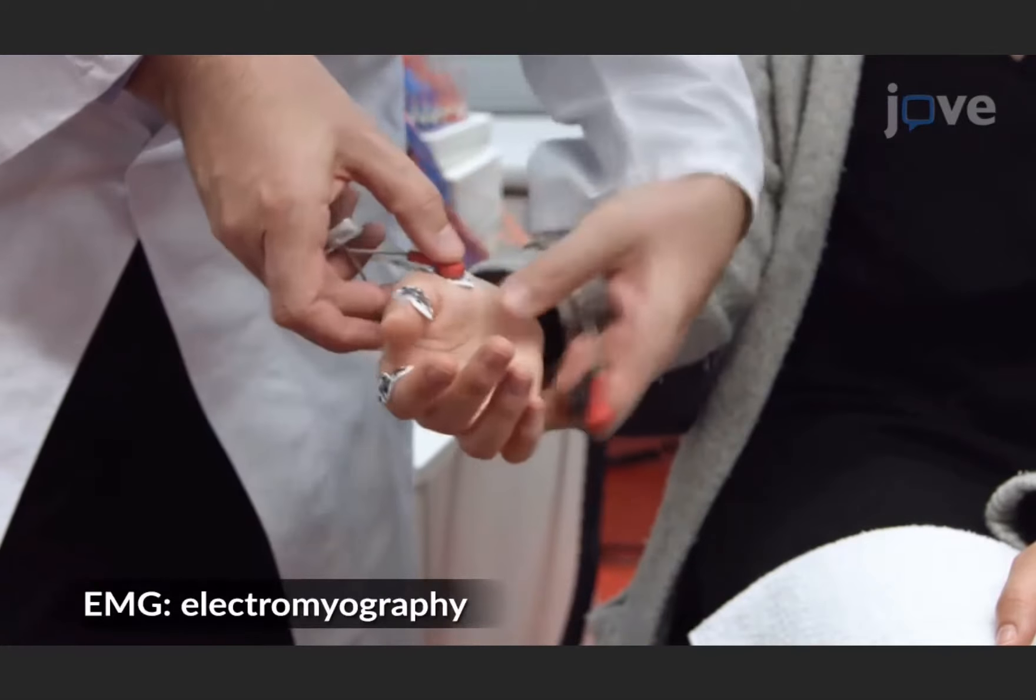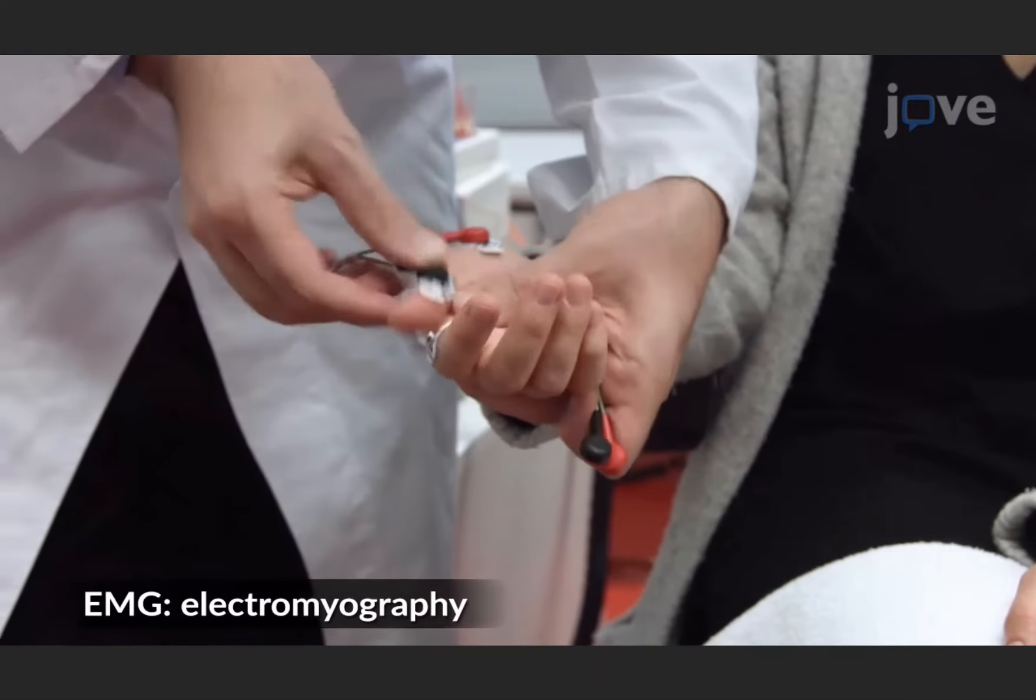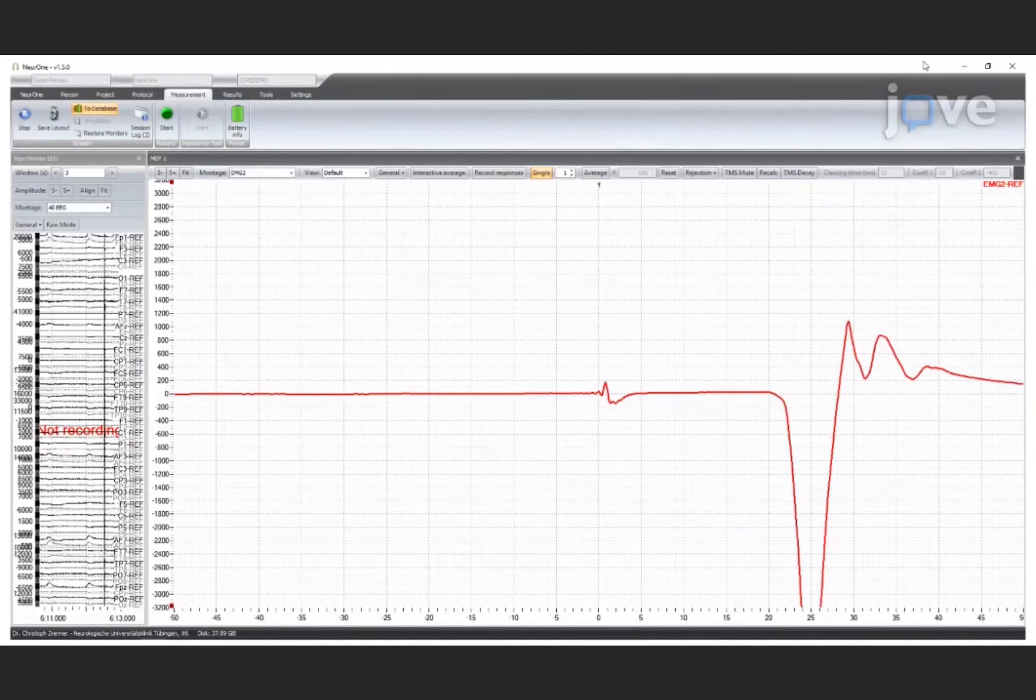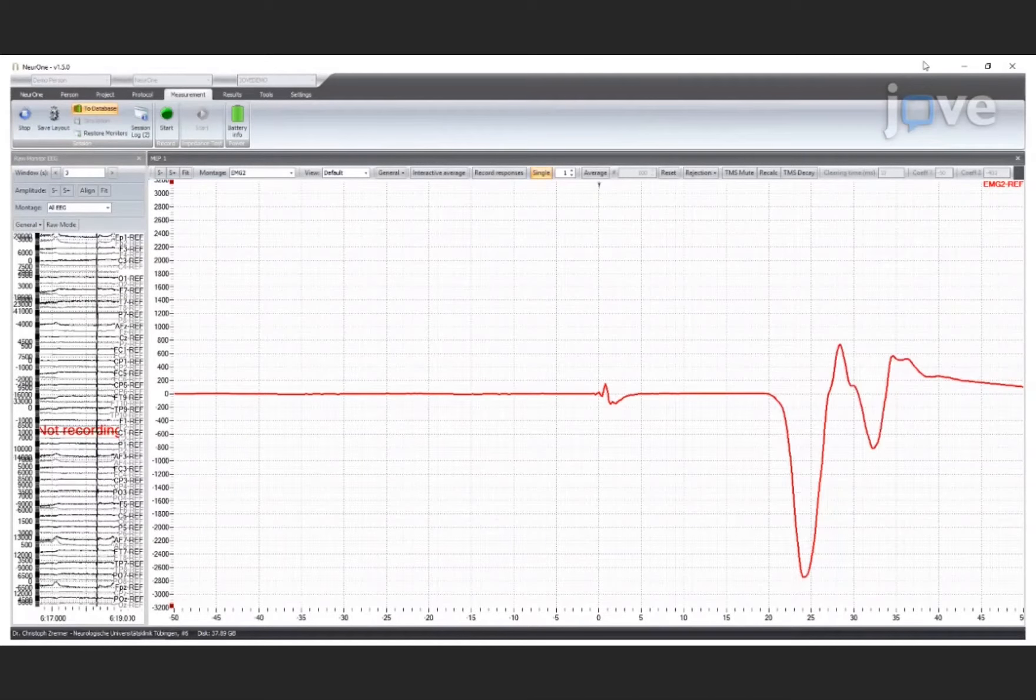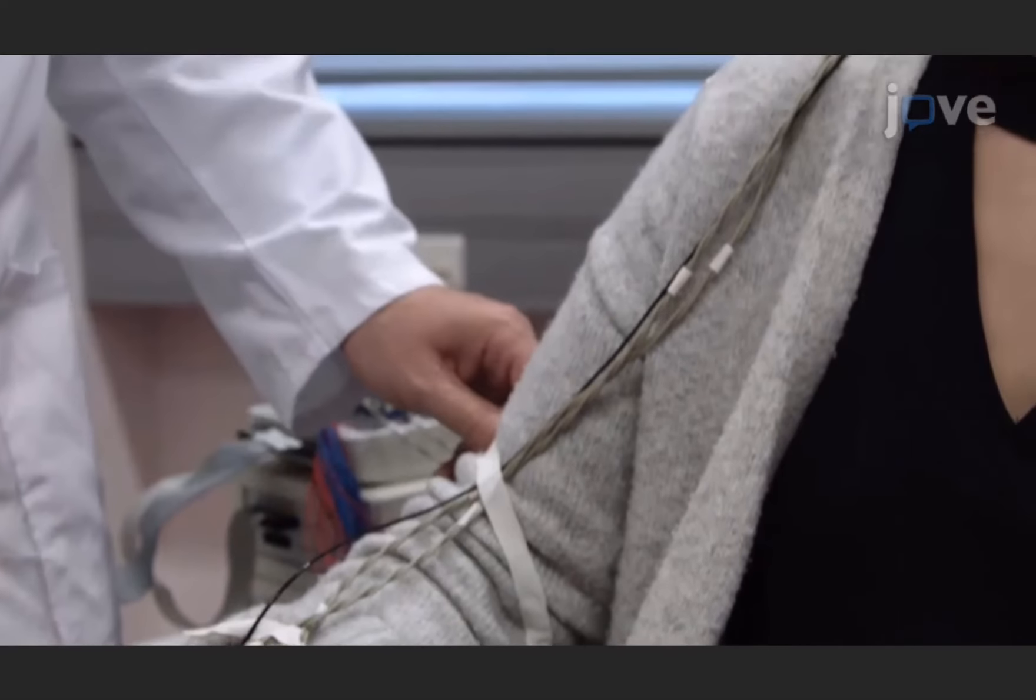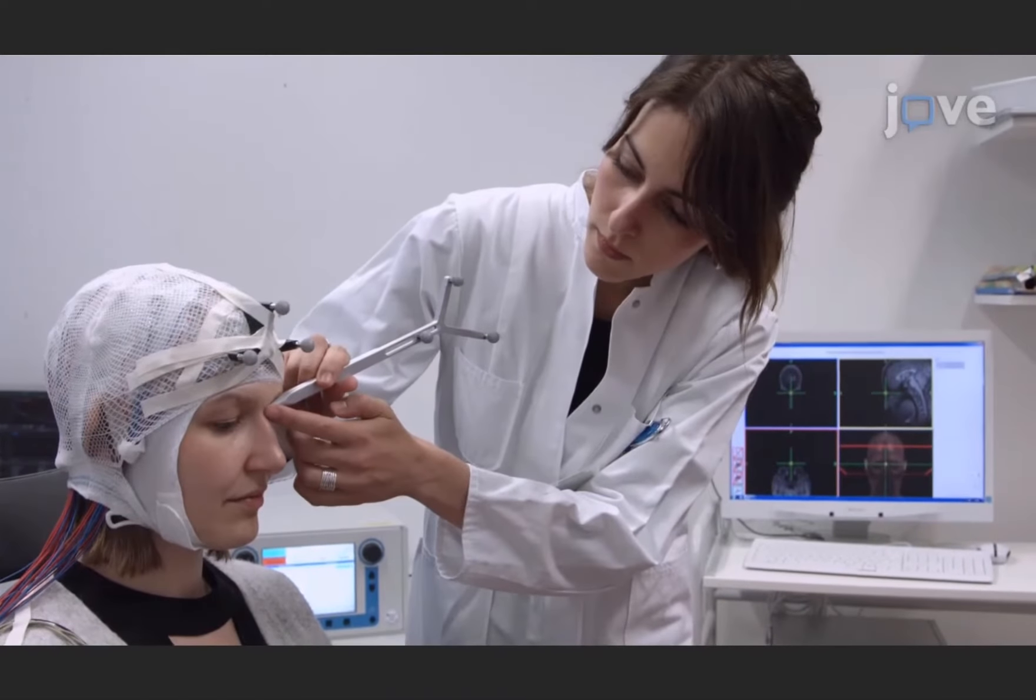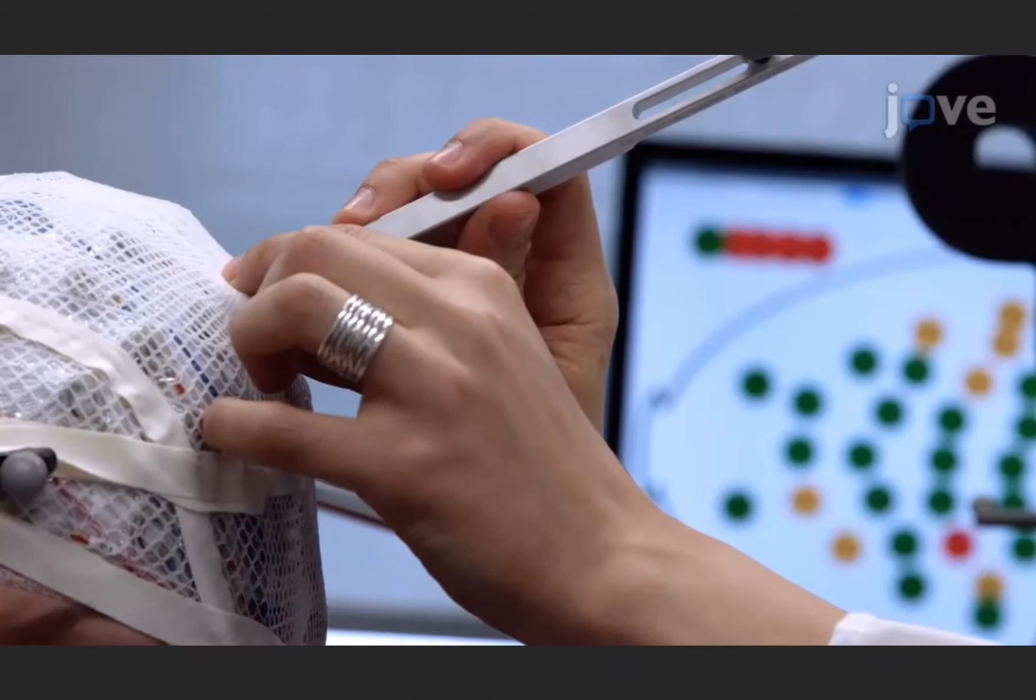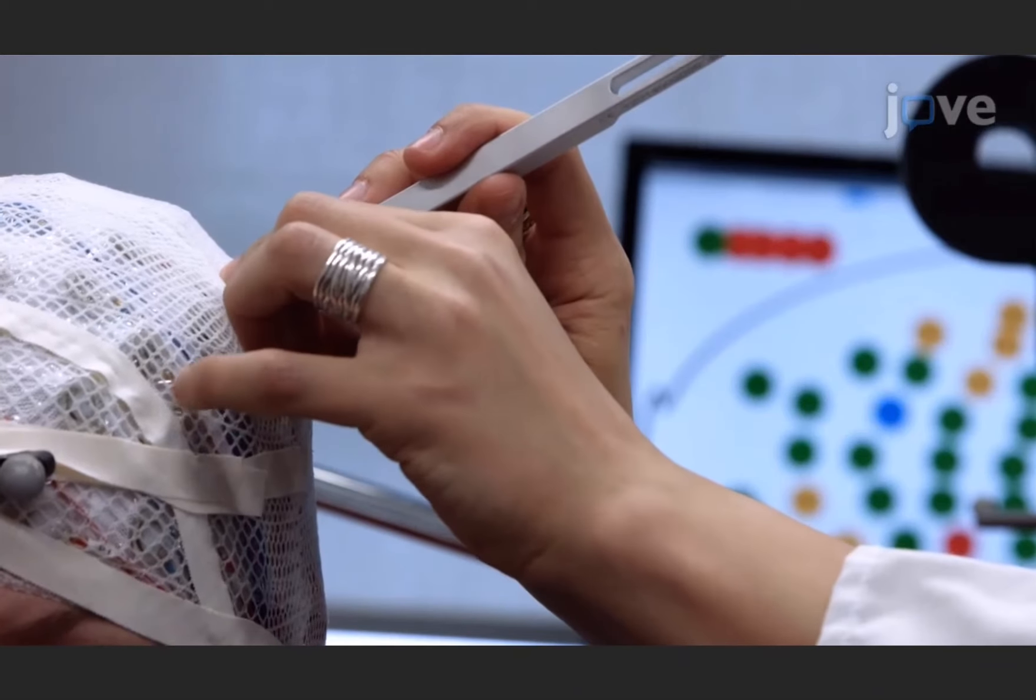Attach the surface EMG electrodes to the cleaned and abraded target muscles and visually inspect the ongoing EEG and EMG signals for bad electrodes. Keep the bipolar EMG cables close together and close to the body of the study participant to reduce line noise pickup. Then use the pointer tool to co-register the head model with relevant anatomical landmarks and pinpoint the EEG sensor locations to enable the subsequent estimation of the individual sources of the EEG activity.